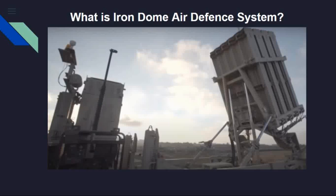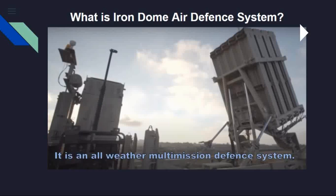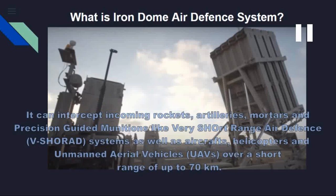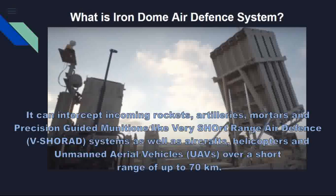Let us now discuss the Iron Dome air defense system, which has prevented rockets fired by Hamas on Israel from falling on Israeli soil. The Iron Dome is an all-weather, multi-mission defense system that can be deployed over land and sea and can engage multiple targets simultaneously. It can intercept incoming rockets, artillery, mortars, precision-guided munitions, very short range air defense systems, as well as aircraft, helicopters, and unmanned aerial vehicles over a short range of up to 70 km.